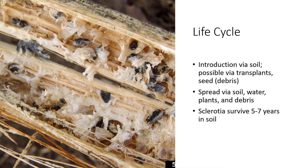Overall, the life cycle of Sclerotinia begins with the introduction of the fungus into the field or high tunnel. Usually Sclerotinia comes in mixed in with soil particles or in infected transplants. Sometimes even seeds are not cleaned well, and if there's debris that hitchhikes in with a bag of seed, that's usually the initial introduction into a field or high tunnel.